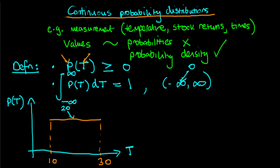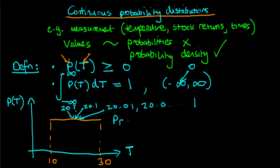Can we use this density to determine the probability that the temperature is exactly 20 degrees Celsius? Is the probability given by the height of the orange line on the y-axis? Well, consider also 20.1 degrees Celsius, or 20.01, or 20.0000...1 degrees Celsius. Surely there are an infinite number of temperatures close to 20 degrees Celsius, and because there are an infinite number of such values, the probability of any individual one being exactly the temperature of the sea is zero.